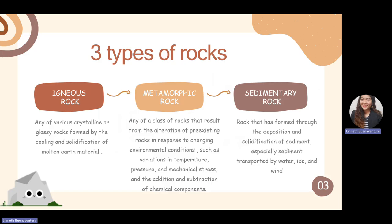We have three types of rocks: igneous, metamorphic, and sedimentary. Igneous came from the word meaning 'fire,' because igneous rocks are a type of rock that came from a volcano or cooled-down magma. Igneous rocks are any of various crystalline or glassy rocks formed by the cooling and solidification of molten earth material. Commonly we can find igneous rocks near a volcano or magma reservoir.